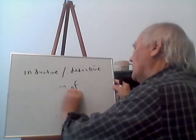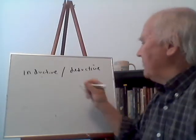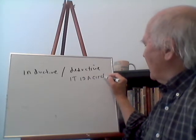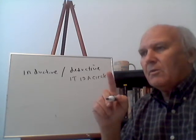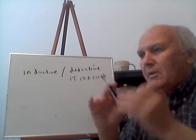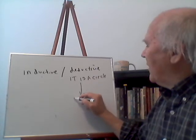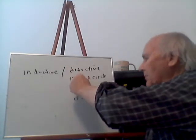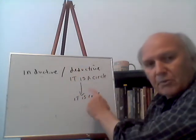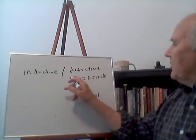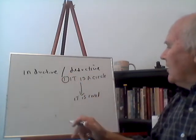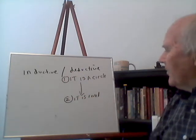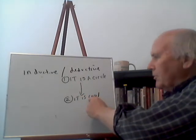Let me give you a very simple deductive argument. The premise is: it is a circle. And from that I'm going to conclude something. The conclusion is: it is round. It's an argument because we have a premise and a conclusion. The premise is a reason to believe that the conclusion is true. Statement one: it is a circle. Therefore, it is round. If the premise is true, the conclusion has to be true. If it is a circle, it has to be round.